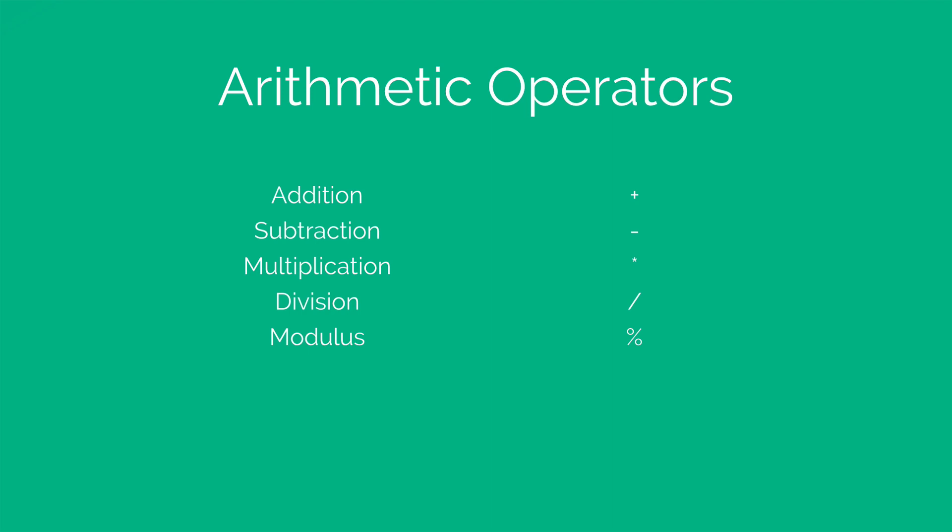So there are 5 things that you can do with numbers. That would be plus, minus, multiply, divide, and something called a Modulus.